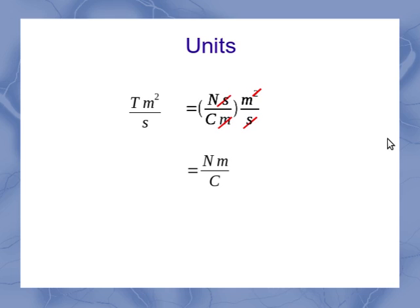Well, a Newton meter is also equal to a joule, so that gives me a joule per coulomb. And going way back to our original definition of a volt, a joule per coulomb, the electric potential energy per charge, is a volt. So, indeed, my Tesla meter squared per second is equal to a volt.